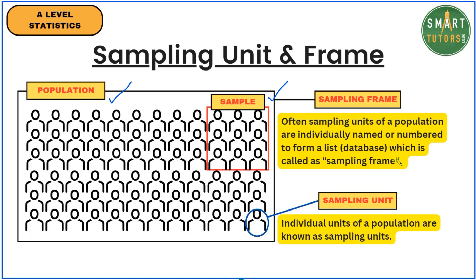A hidden exam question: what is the sampling frame? It is all individual sampling units listed with numerical numbers — that is the sampling frame. The sampling unit is the individual unit of the population. For example, one single water bottle in a shop is a sampling unit.